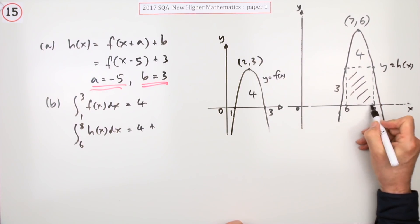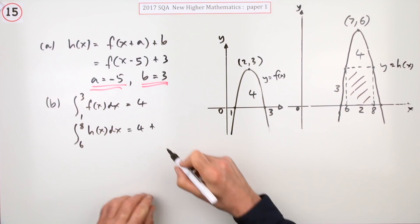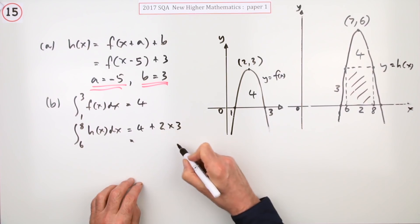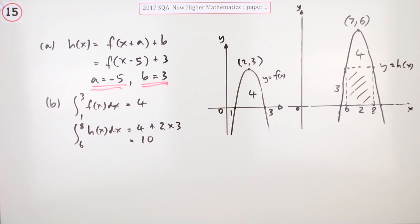So 3 times 2 or 2 times 3, so that must be 4 plus 6, which is 10. There's only one mark for all of that, for all of that interpreting and understanding.